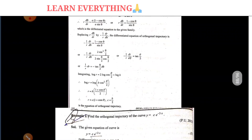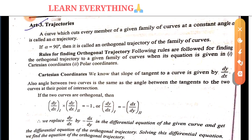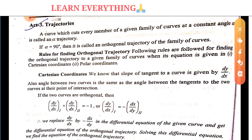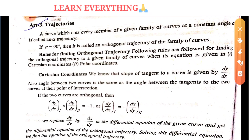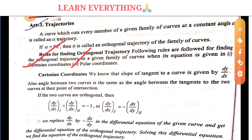I hope it is clear what an orthogonal trajectory is. Next, the rule for finding the orthogonal trajectory. We can find the orthogonal trajectory in two ways: first using Cartesian coordinates (x, y, z) and the other using polar coordinates (r, theta, phi). We will deal with Cartesian coordinates first.